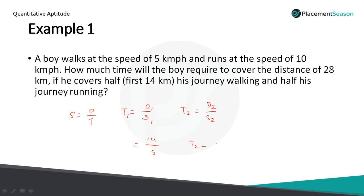And the second one is t2 equals what is the distance? Again 14 km. He covers with 10 km per hour. Time taken to complete first 14 km is t1 and time taken to complete the second 14 km is t2. So just add the time, you will get the answer.